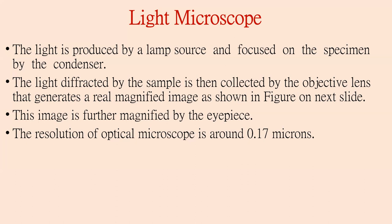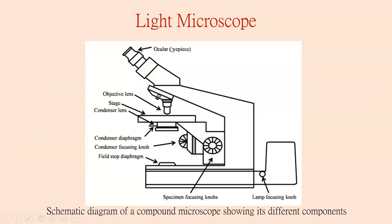This image is further magnified by the eyepiece, and the resolution of this optical microscope is around 0.17 microns. In the light microscope, the eyepiece is where we observe the specimen by focusing the objective lens. The specimen is rested on the stage. The condenser lenses focus the light, and we can adjust the wavelength of light focusing on the specimen by adjusting the condenser focusing knob.